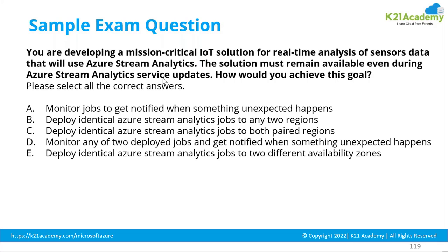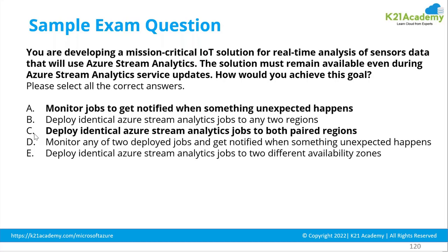Availability zone is not a valid option here because service updates happen at the region level, so option E is out of the picture. Monitor any one of the two deployed jobs and get notified when something unexpected happens. Since they are identical, you can monitor either one. The right answer appears to be A, C, and possibly D.